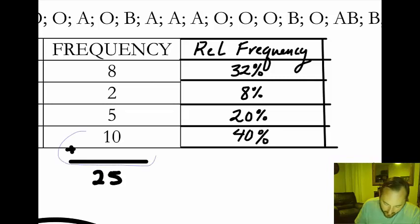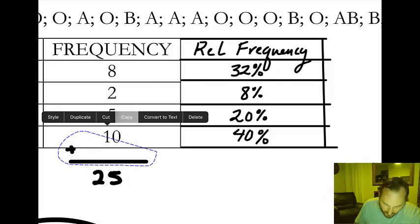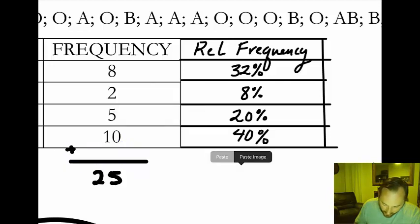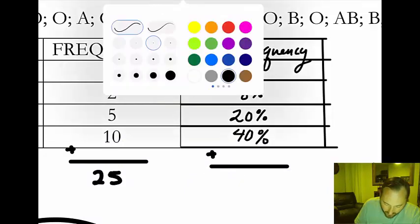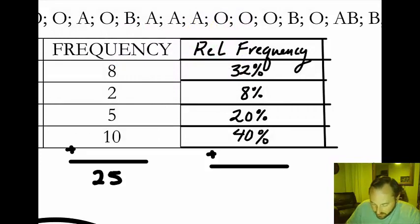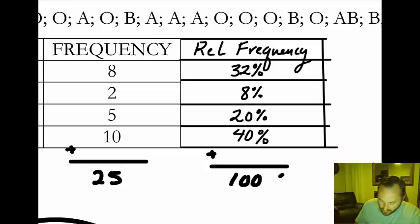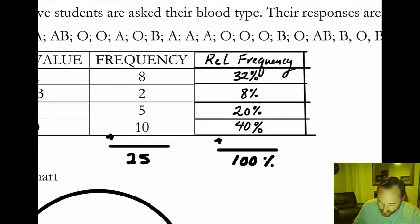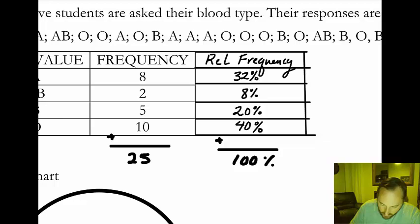If we go ahead and add those all up, that total should be a perfect 100 — particularly since we didn't have to do any rounding here. 32 plus 8 is 40, 40 plus 20 is 60, 60 plus 40 — there we go, we got an even 100%. Great.